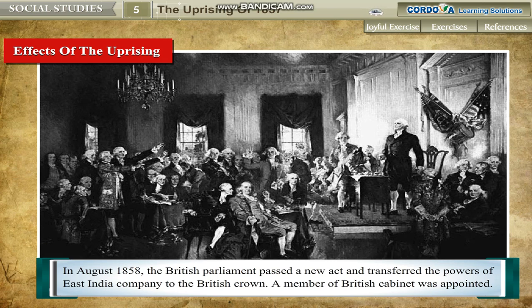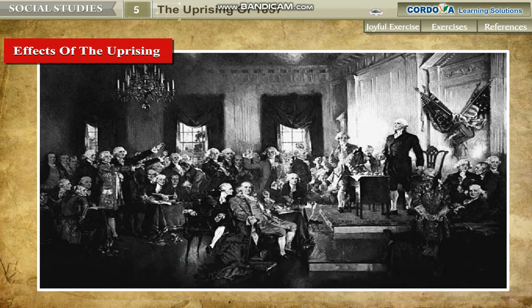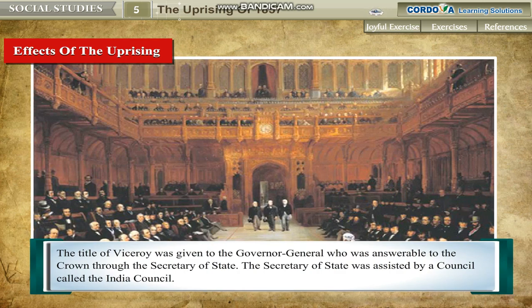A member of the British Cabinet was appointed — the Secretary of State for Indian Affairs, responsible to the British Parliament, was made in charge of British political affairs in India. The title of Viceroy was given to the Governor-General, who was answerable to the Crown through the Secretary of State.